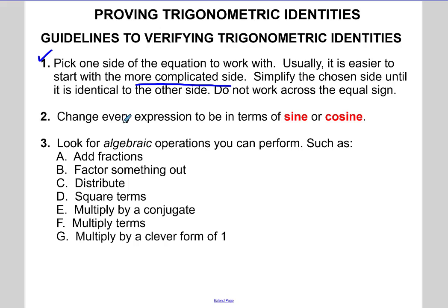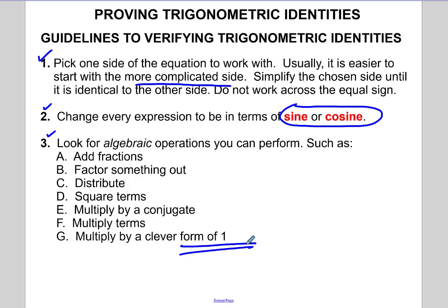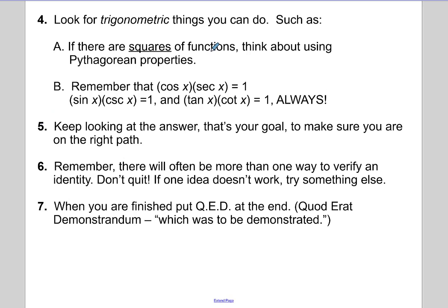You can change every expression to be in terms of either sine or cosine. A third thing you can do is look for algebraic operations like adding fractions, factoring, distributing, squaring terms, multiplying by conjugates, multiplying terms together, or use some kind of clever form of a 1. Those are just some tips and tricks we can use.